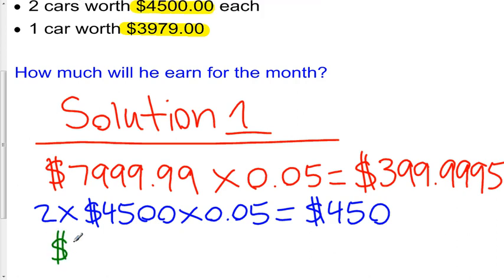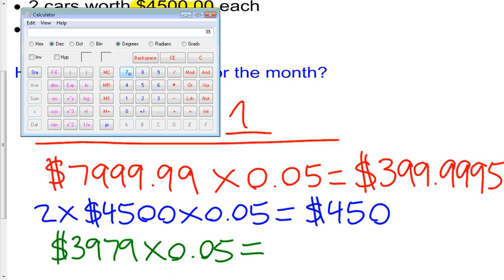And 5% of that is $3,979 times 0.05, $198.95.